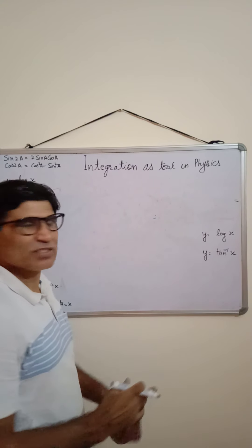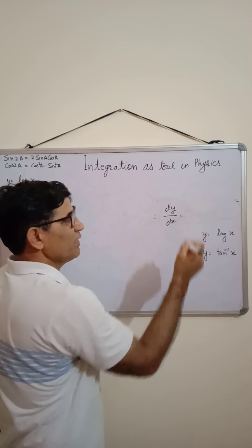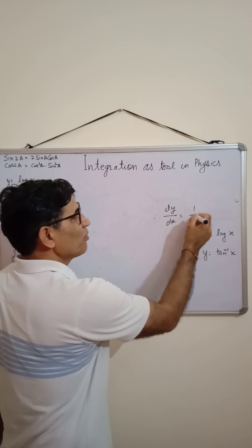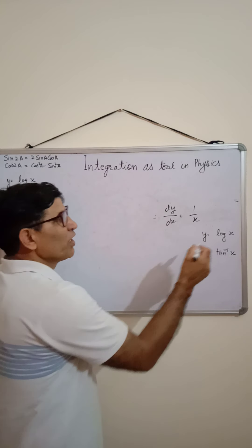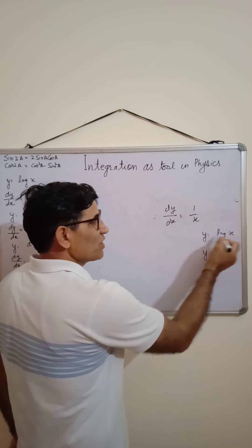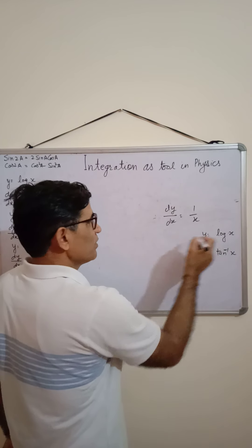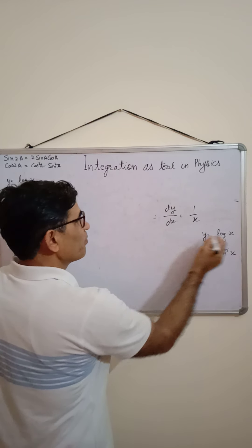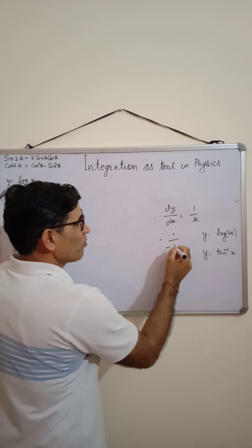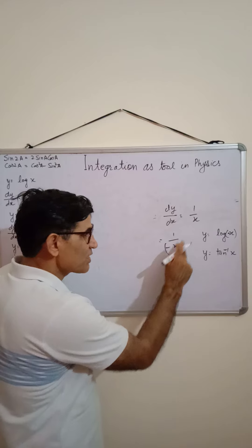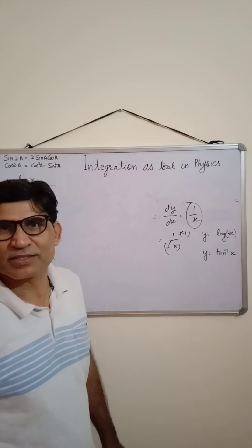For the logarithm function, the differentiation formula is dy/dx = 1/x. Note that even if we had log(−x), it doesn't matter — the answer is still 1/x, because the differentiation of (−x) is −1, and the two negatives cancel, giving 1/x again.